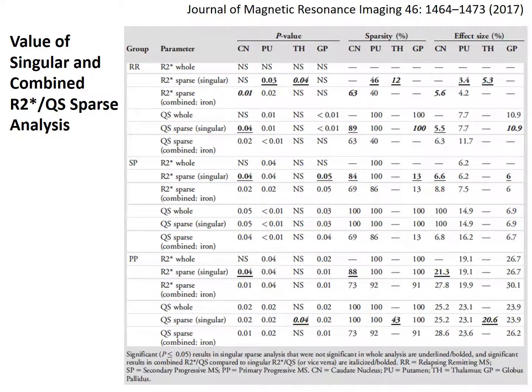The shown table demonstrates the value of singular and combined R2-star and quantitative susceptibility sparse analysis compared to the standard whole structure analysis. For example, the putamen and thalamus of the relapsing remitting MS group became significantly different between patients and controls when using singular R2-star, but were not significant using whole structure analysis, which is highlighted in red in the table. This indicates that the sparse analysis has increased the power of the test.